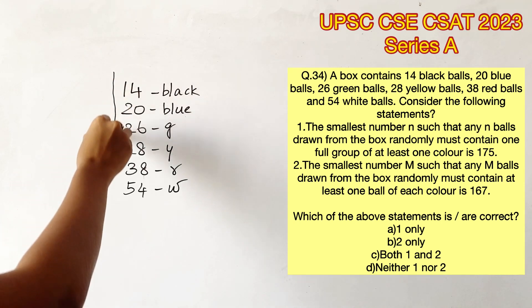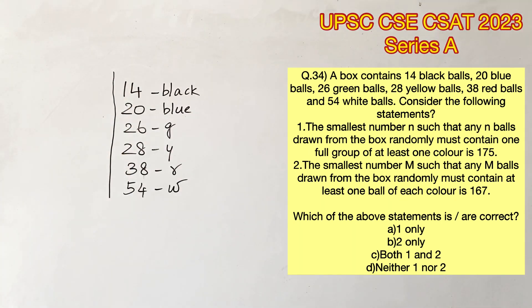The first statement says the smallest number n such that any n balls drawn from the box randomly must contain one full group of at least one color is 175. Since the statement contains 'must,' it is evident that we have to find a number where the given condition holds true for whatever case we choose.